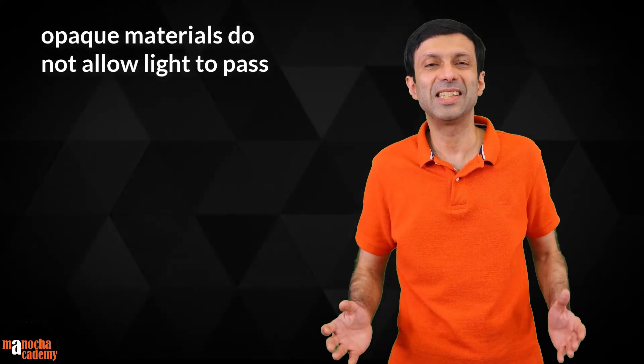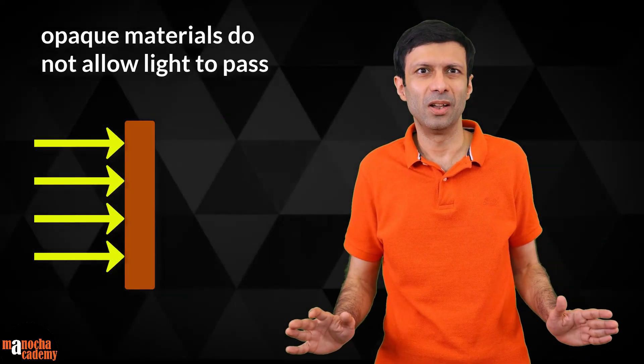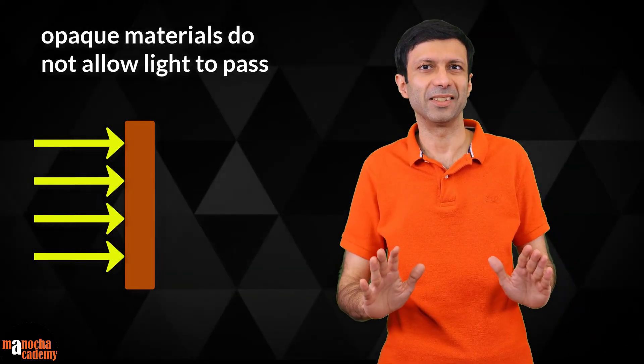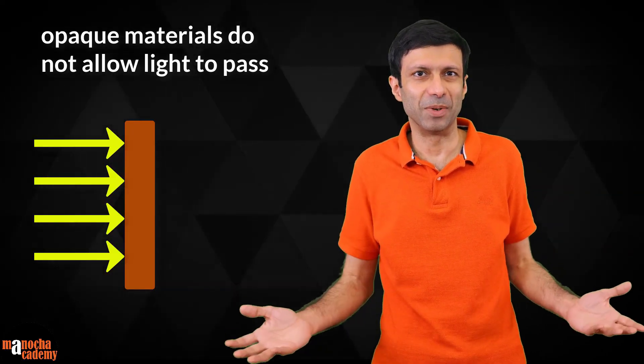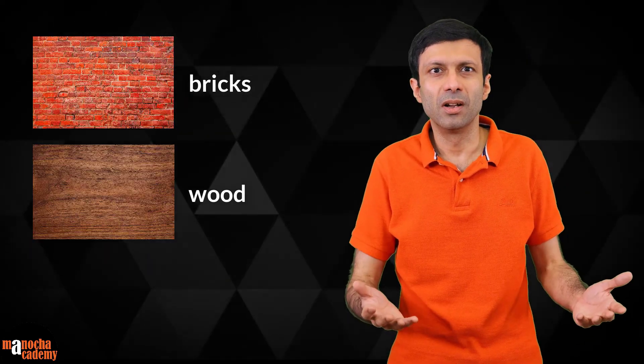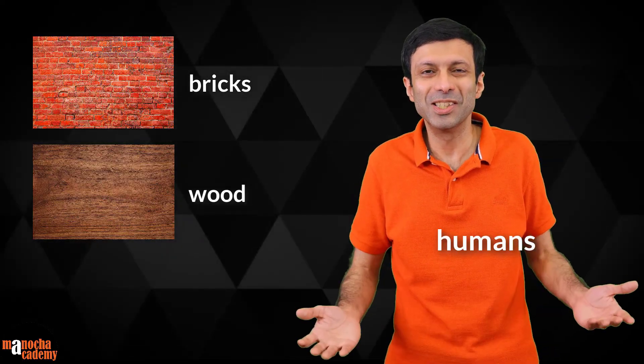A material is said to be opaque if it does not allow any light to pass through. It completely blocks the light. Light is absorbed and reflected by the material. Examples of opaque materials are bricks, wood, and many objects that you see around you. Even you and I, humans, we are opaque because light cannot pass through us.